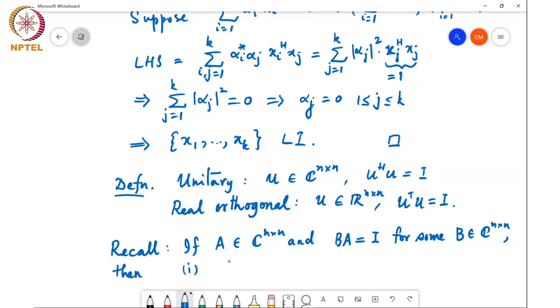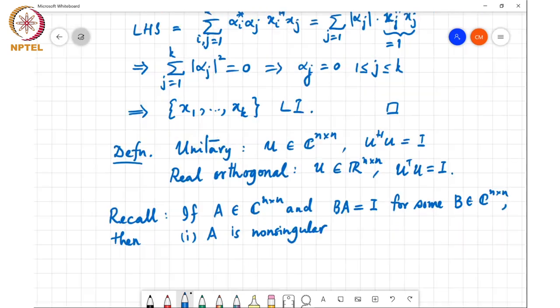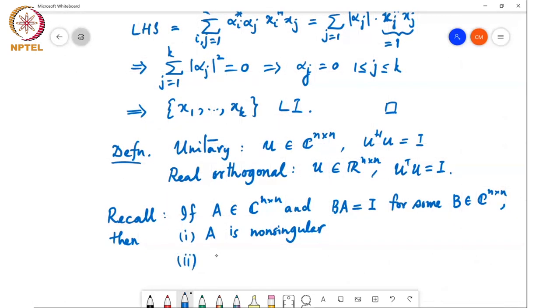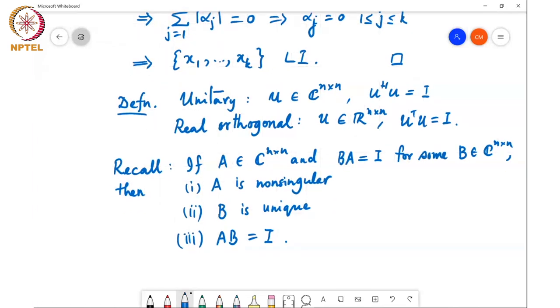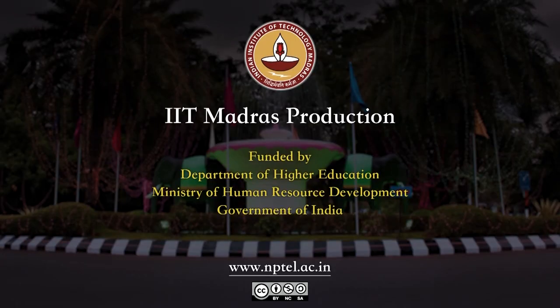1) A is non-singular, 2) B is unique, and 3) AB is also equal to the identity matrix. OK, and so as a consequence we can write B equals A inverse.